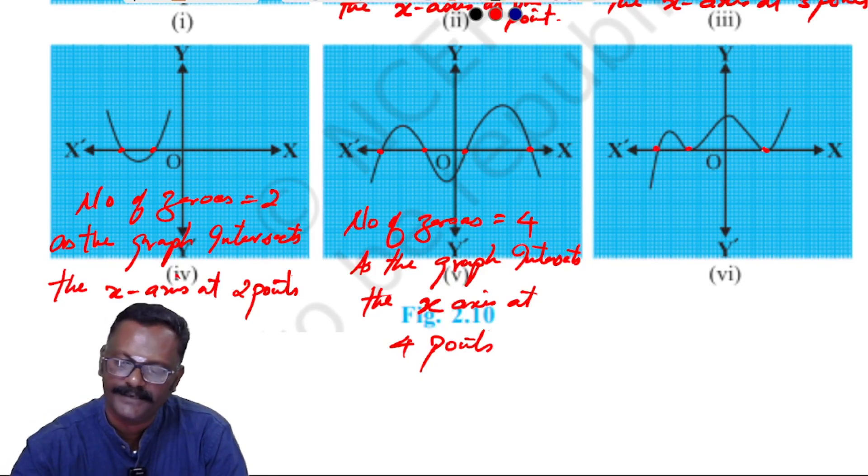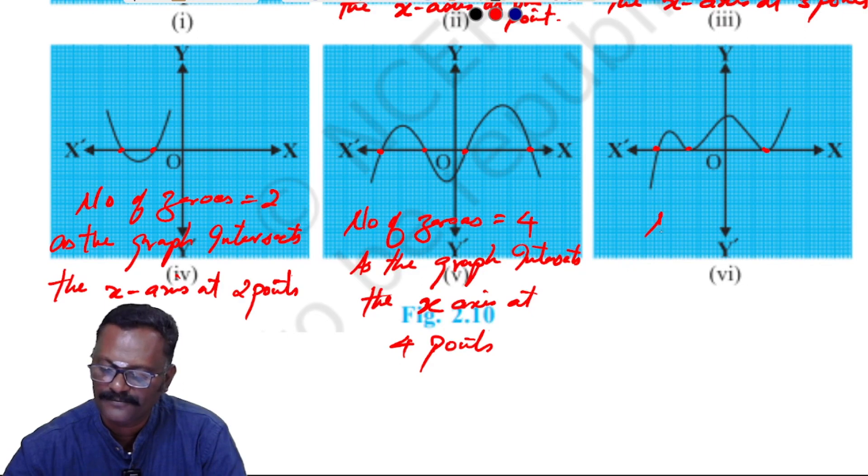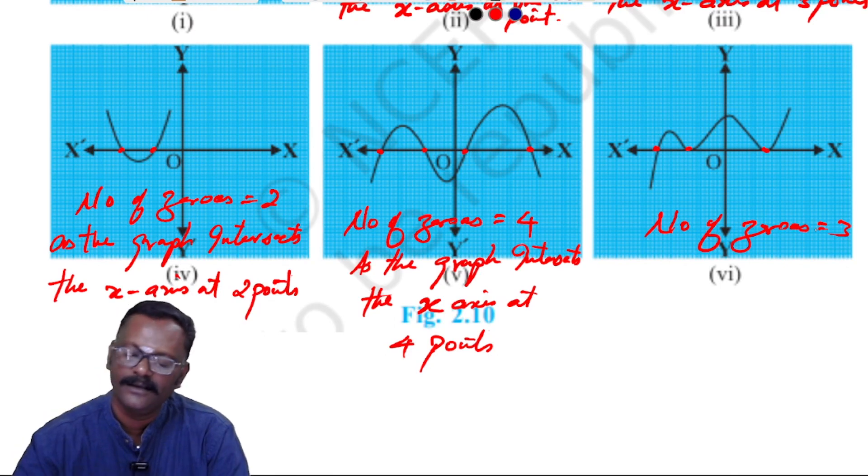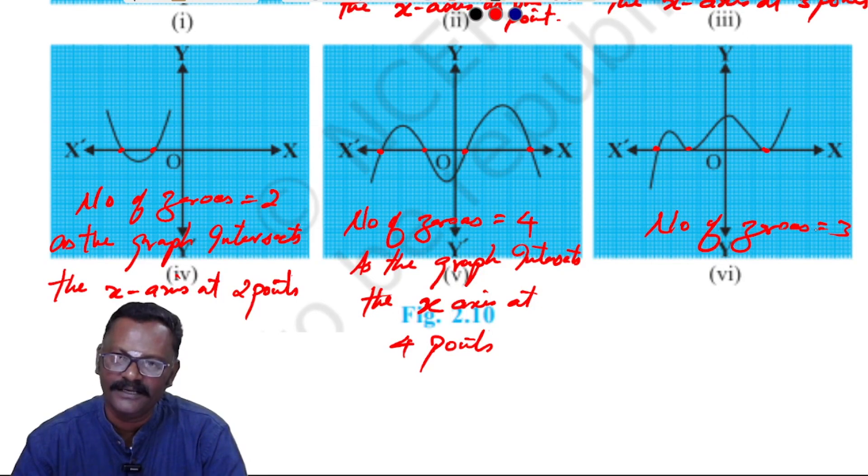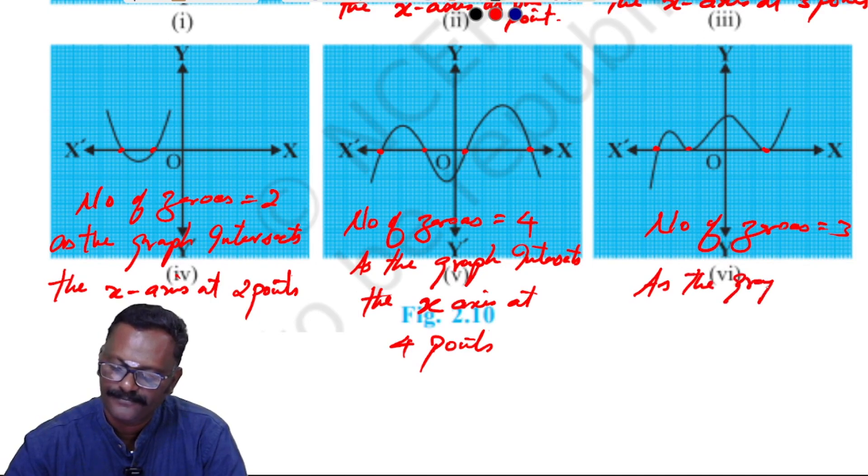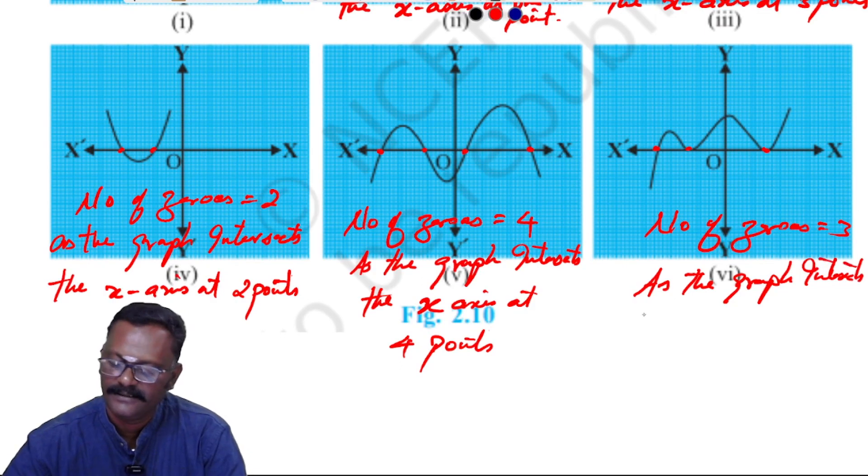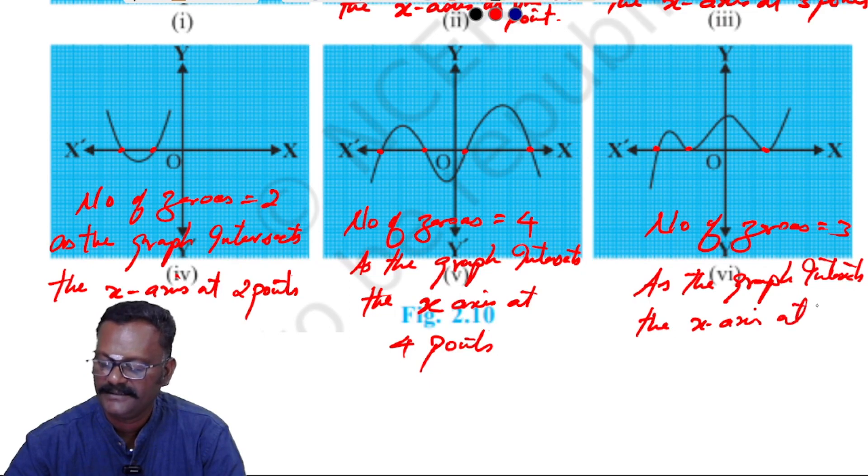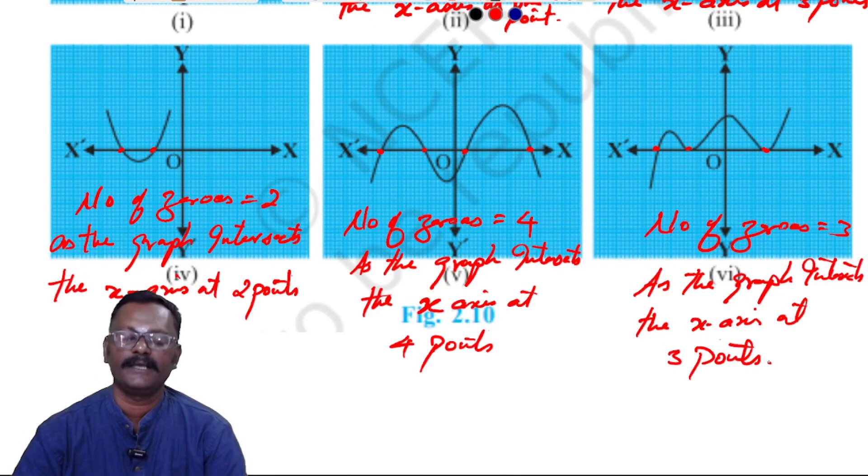Let us look at the sixth graph: one, two, three. Number of zeros equal to three. Either touch or intersect - that is the number of zeros equal to three. Reason: as the graph intersects the x-axis at three points. Thank you.